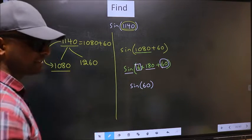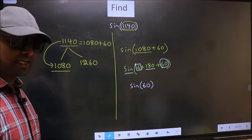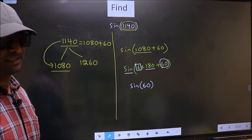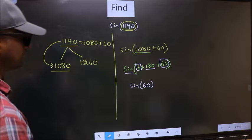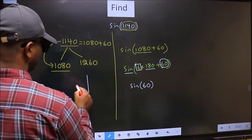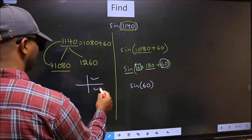And 6 is even. And all the even multiples of 180, they lie in either the first or the fourth quadrant.